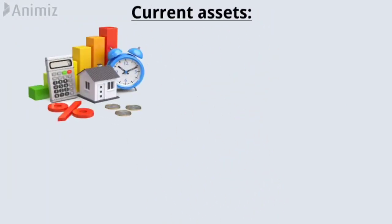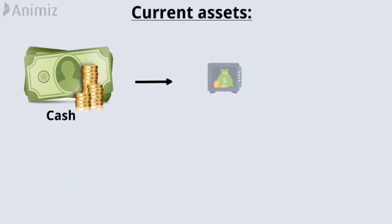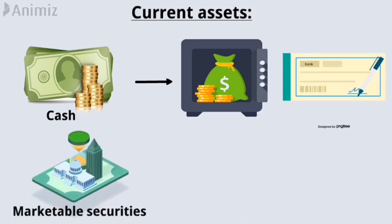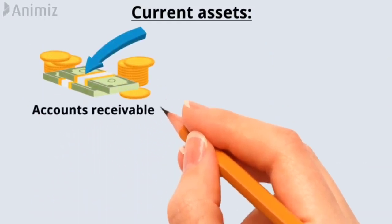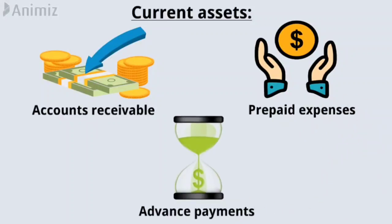Current assets that can be converted into cash within one year of the balance sheet date, including cash, money in bank accounts and undeposited checks from customers, marketable securities, short-term investments a company intends to sell within one year, accounts receivable, prepaid expenses such as insurance premiums, advanced payments on future purchases, etc.